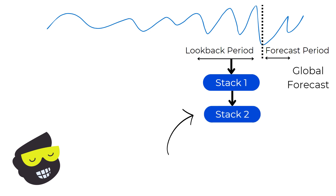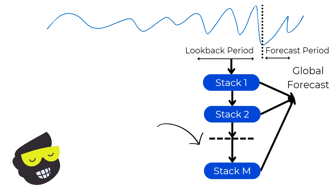After stack 1 processes the look-back period data and generates its initial forecast, it also produces residuals. These residuals — the differences between the predicted values and the actual values — are then passed to stack 2. Stack 2 uses these residuals to refine the forecast further. For example, if stack 1 predicted 150 kWh but the actual value was 155, stack 2 will use this 5 kWh residual to improve its own prediction, creating a more accurate overall forecast. Each subsequent stack refines the forecast further: stack 3 will take the residuals from stack 2 and use them to make even more accurate predictions.